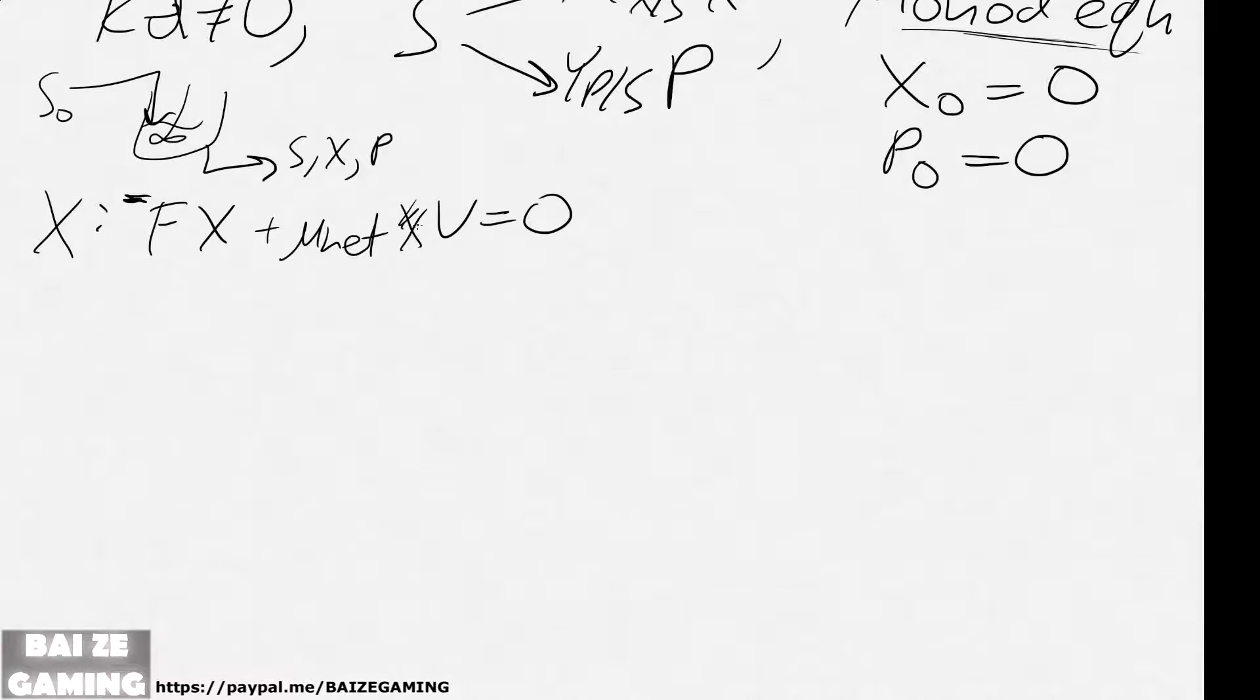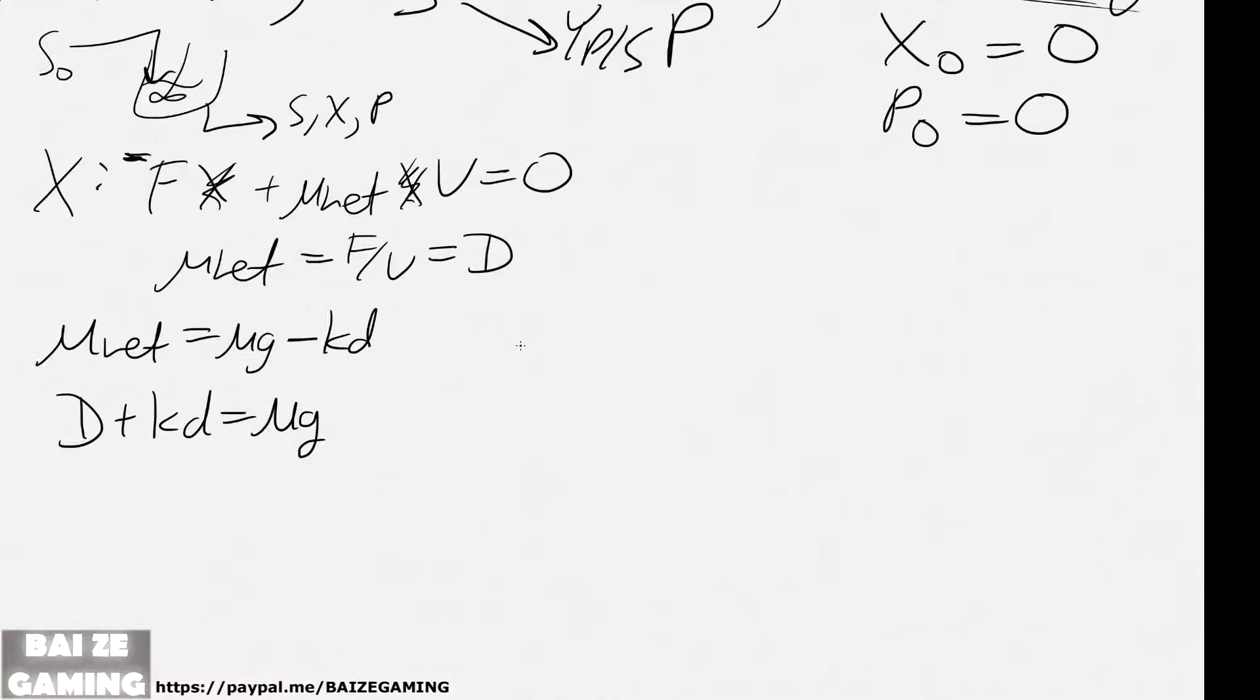Okay, and you can just actually cancel X out, so you'll get that the net specific growth rate will just be F over V equals D. And mu net is mu G minus KD, so really D plus KD is the gross specific growth rate.